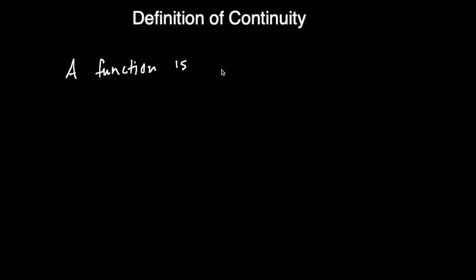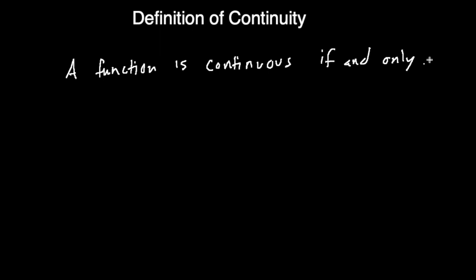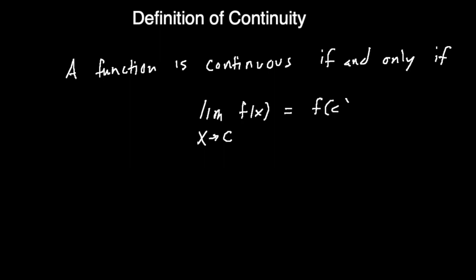Hopefully at this point you're getting bored of the definition of continuity, but one more time: we say that a function is continuous if and only if the limit as x approaches some number c for a function f of x is equal to the function value at that number c.